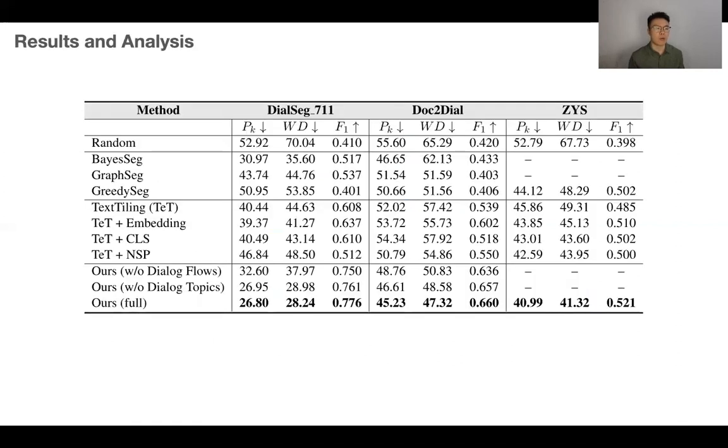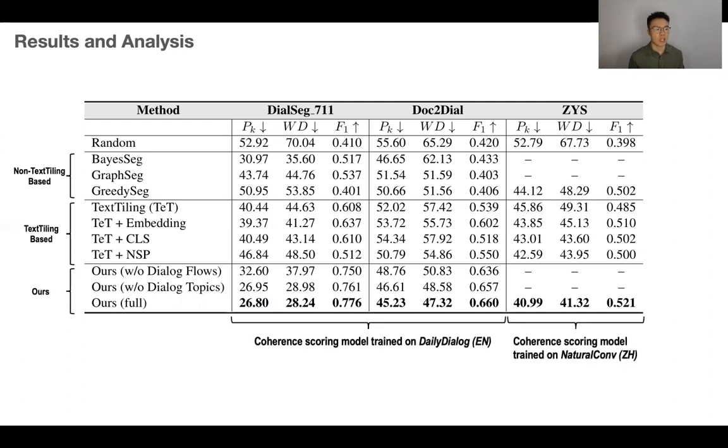Here is the overall results of our proposal compared with multiple unsupervised baselines on two English and one Chinese evaluation set. Baselines including unsupervised baselines not based on text tiling, unsupervised baselines extended from text tiling, and our proposal with or without dialogue attributes into account. We can see that even without dialogue acts or dialogue topics used in the data generating process, the performance can already largely outperform baselines. With both knowledges into consideration, the best performance can be achieved.